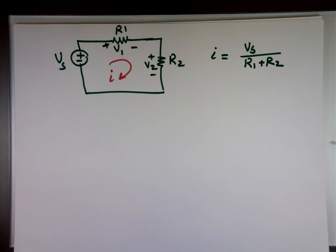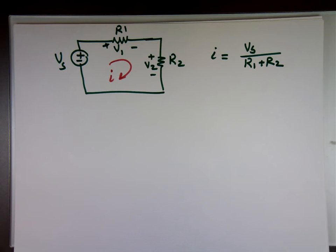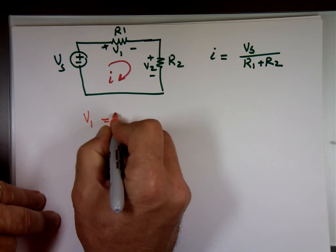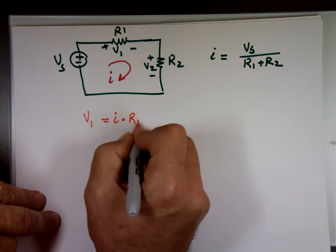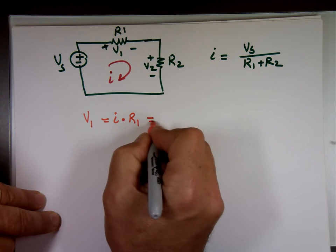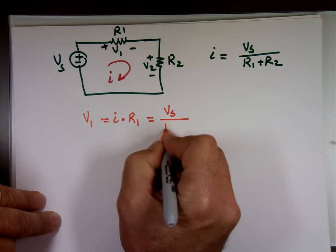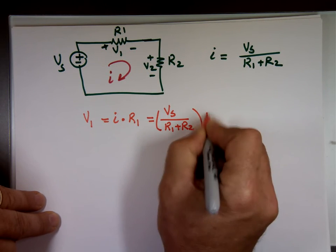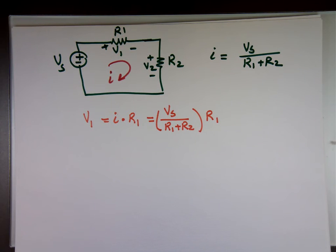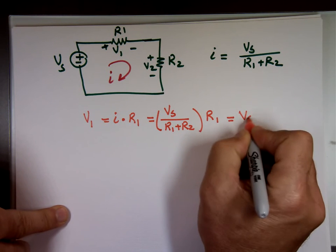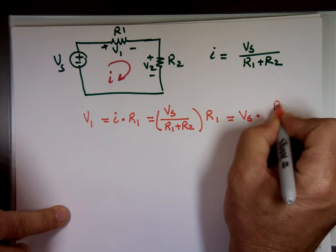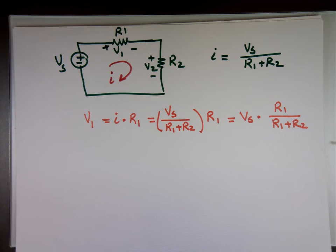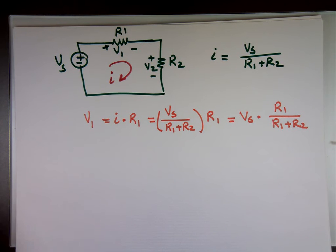Let me redraw that circuit again quickly. And we just finished saying I equals Vs over R1 plus R2. And I is this current. Now, can we find what V1, V2? What is V1? Ohm's law says V1 equals I times R1. Well, we know what I. It's Vs over R1 plus R2 times R1. And that'll give me Vs times R1 over R1 plus R2.